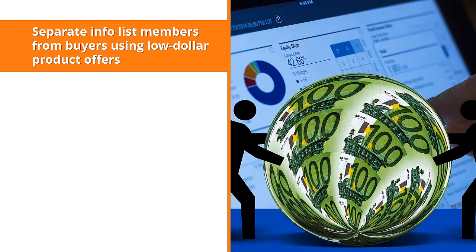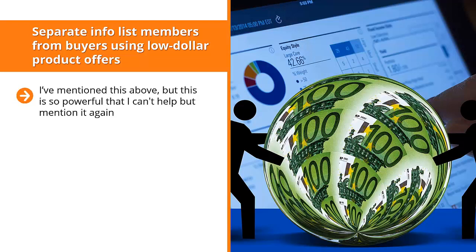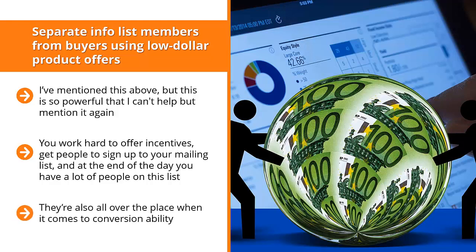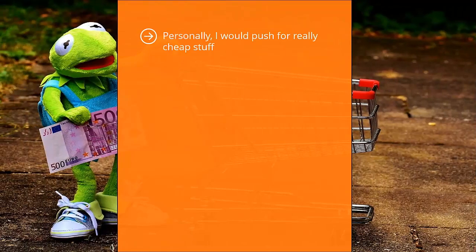Separate info list members from buyers using low dollar product offers. Depending on your niche, it may be unavoidable that you end up with a general information list. You work hard to offer incentives and get people to sign up, but these people are generally just looking for general information. In this case, it's a good idea to send regularly scheduled updates with low dollar information product offers — a $1 booklet, a $1 template package, or similar. Let your system send out these offers and set up your email management software to automatically unsubscribe people who buy these $1 items and move them to your buyers list.